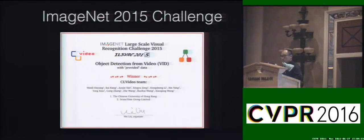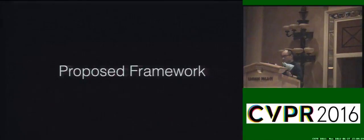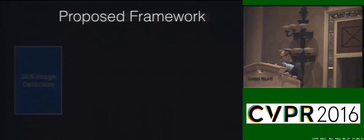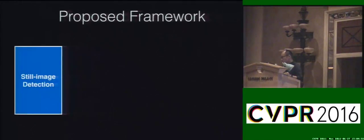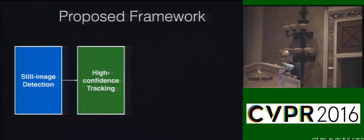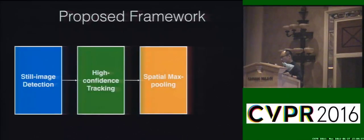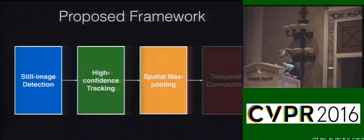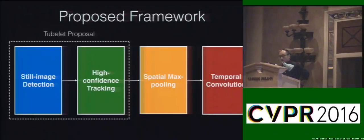Part of this technology contributes to the winning framework of last year's ImageNet detection challenge. The proposed framework contains four sub-steps: still image detection, high-confidence tracking, spatial max pooling, and temporal convolution.